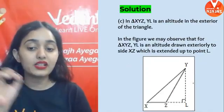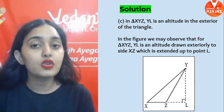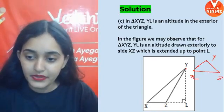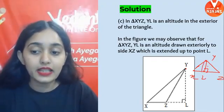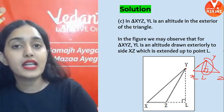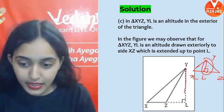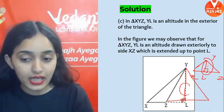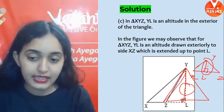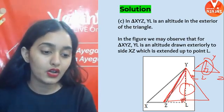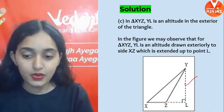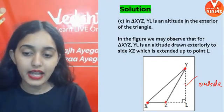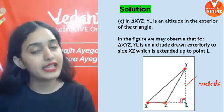Now we have to make triangle XYZ such that YL is an altitude but in the exterior of the triangle. Draw triangle Y, X, Z — an obtuse triangle — so that the altitude from Y falls outside the triangle. Line YL is the altitude to the extension of side XZ, and it lies outside the triangle.